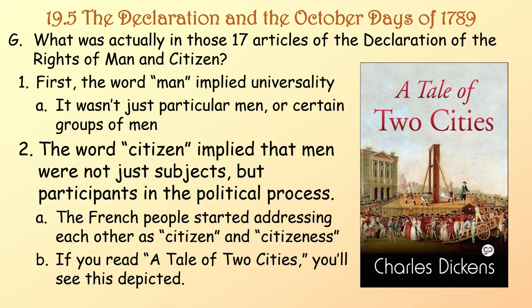What was actually in those 17 articles of the Declaration of the Rights of Man and Citizen? First, the word 'man' implied universality — it wasn't just particular men or certain groups. And the word 'citizen' implied that men were not just subjects, but participants in the political process. The French people started addressing each other as 'citizen' and 'citizeness.' If you read A Tale of Two Cities by Charles Dickens, you'll actually see this depicted.